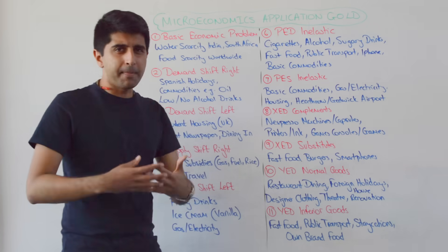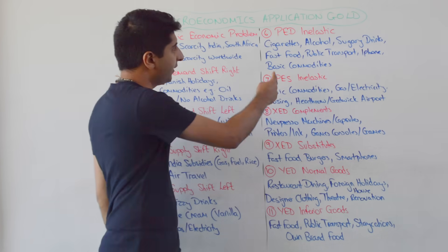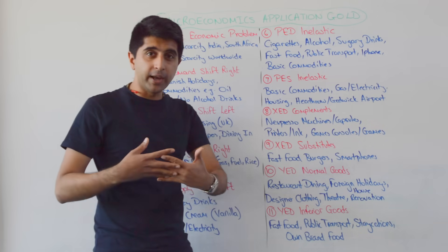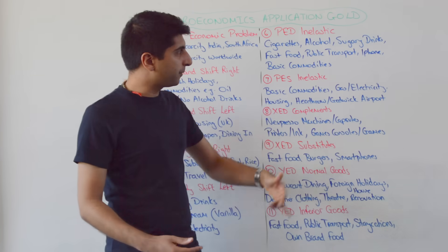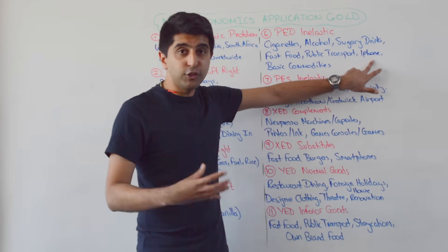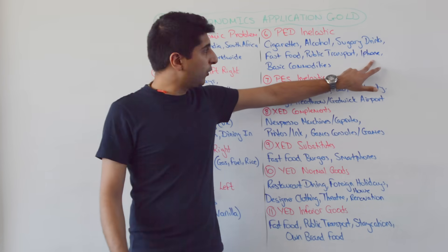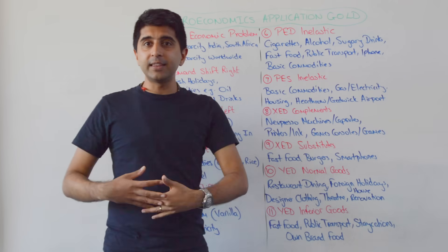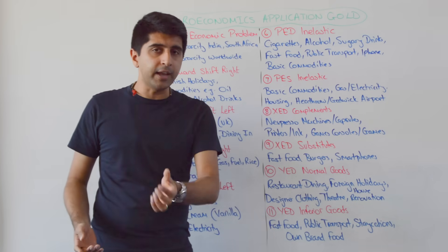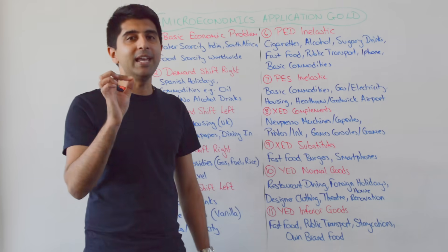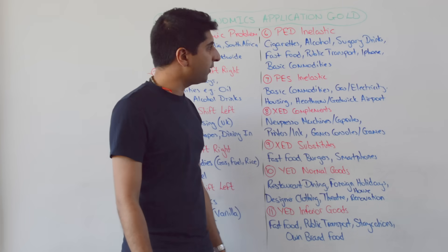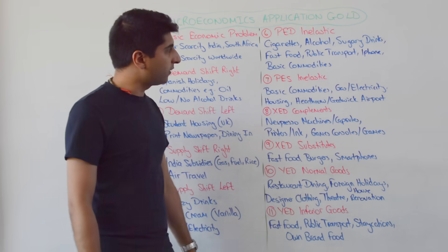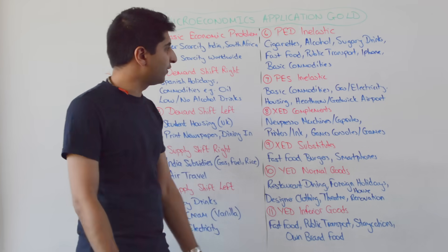If we look where demand is price inelastic, look no further than goods like cigarettes, alcohol, sugary drinks, and fast food — quite addictive goods. Public transport is a necessity. Demand for the iPhone X: we all know how the price increased significantly, but Apple have recently said that revenues have increased significantly — a sign of quite significant price inelastic demand. Basic commodities also qualify, with very few substitutes available and being necessity goods.